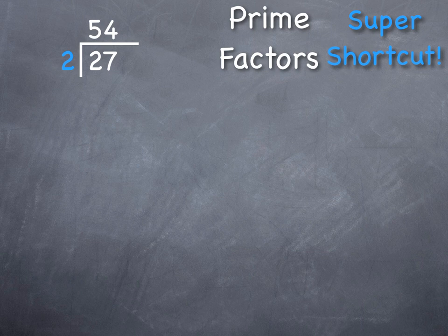Start with the first prime number of 2, and say, does 2 go into 54? If it does, we're going to write 2 outside of this little, almost like a little division. It's not quite division. But we write 2, and then 54 divided by 2 leaves me 27.